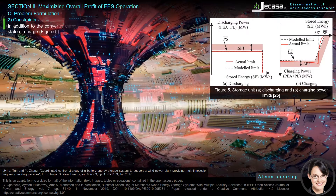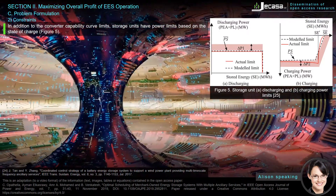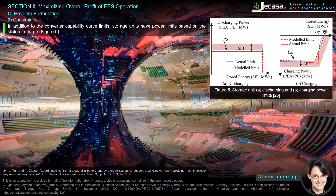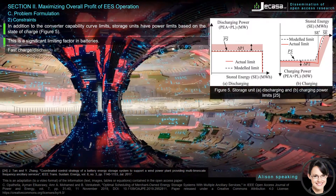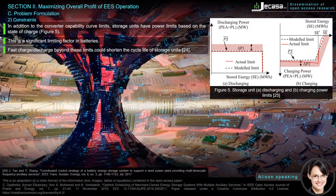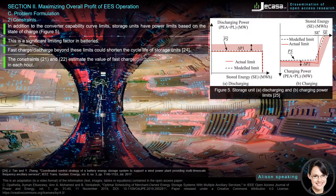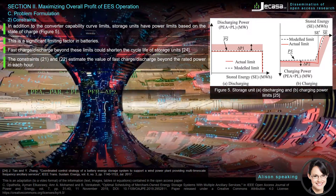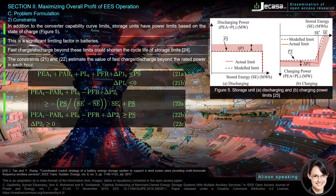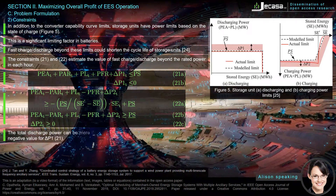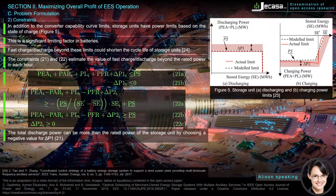In addition to the converter capability curve limits, storage units have power limits based on the state of charge, as shown in Figure 5. This is a significant limiting factor in batteries — fast charge/discharge beyond these limits could shorten the cycle life of storage units. Constraints 21 and 22 estimate the value of fast charge/discharge beyond the rated power in each hour. The total discharge power can be more than the rated power of the storage unit by choosing a negative value for delta P.